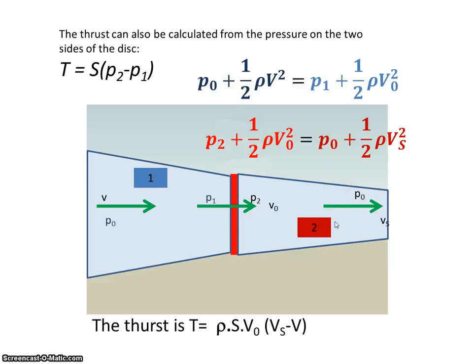Now if we take Bernoulli's equations, I can say that at this point here the static pressure plus its dynamic pressure ½ρv² will be the same as the static pressure here and the velocity here ½ρv₀². And on the exit side the static pressure here plus the velocity will be equal to the static pressure out here plus its dynamic velocity, sorry, dynamic pressure.